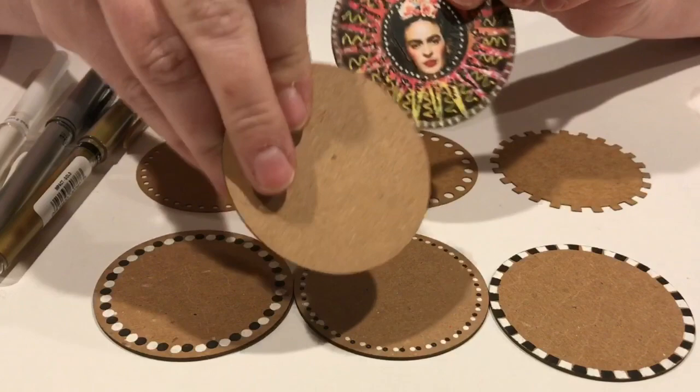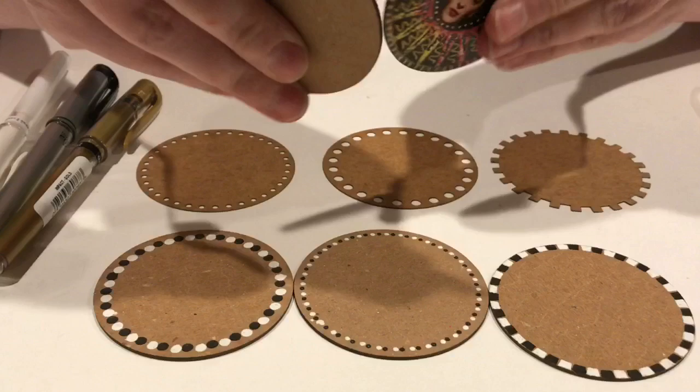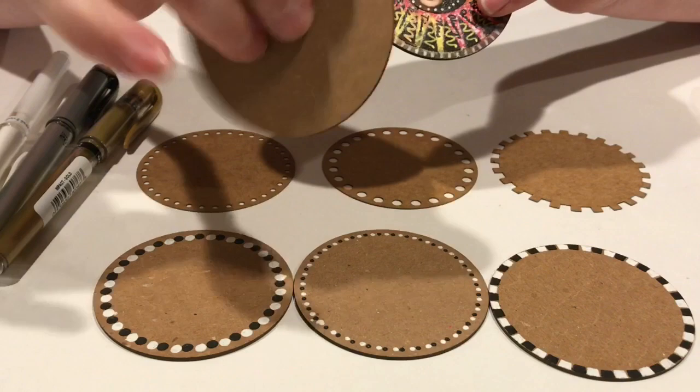We have the very useful artist trading coin blanks and they're made out of a durable chipboard. The thickness I think is very perfect for this type of application. It's thin but it's very durable so it's not going to bend or get crushed in the mail if you are mailing these out to people.